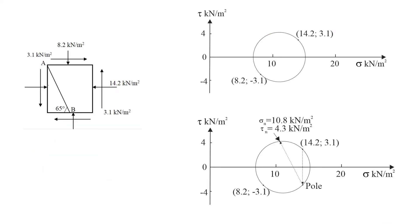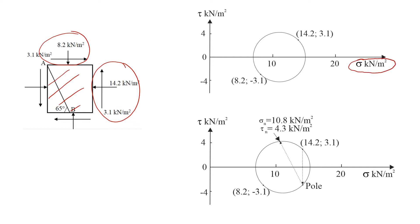In the first example, we have a soil element with stresses acting on the top face and the right-hand side. We draw axes using normal stress and shear stress. We need to locate two points to draw Mohr's circle. For the stresses acting on the top part of the soil element, the normal stress is 8.2, while the shear stress is acting clockwise, so it will be negative: −3.1.